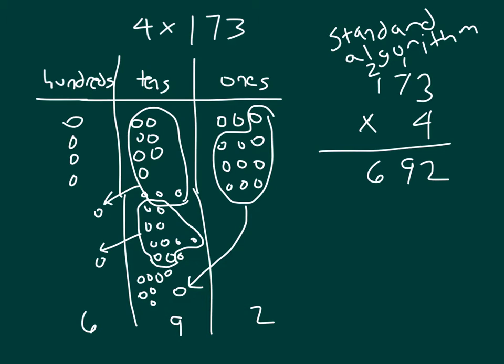So 4 times 173, shown right there in the standard algorithm. And of course, it relates back to the place value chart. You'll notice that I did regroup from the ones place to the tens place, and there's that one there. And I regrouped from the tens place to the hundreds place, and there's those two regroups shown there.